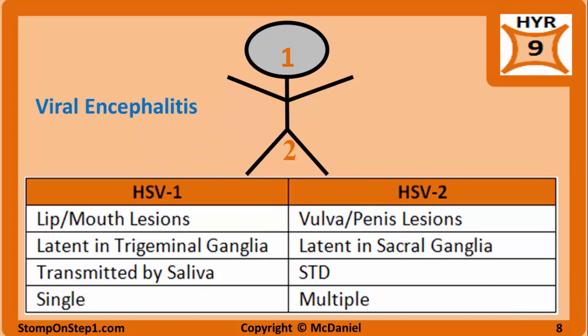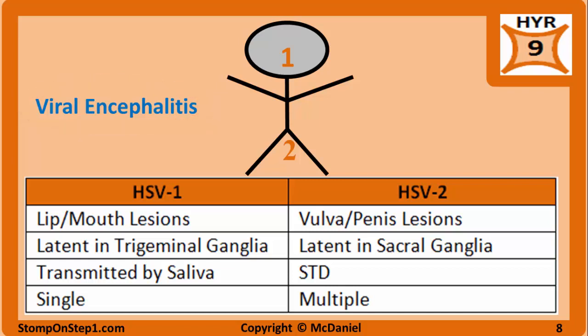One last thing about herpes simplex is that HSV1 is the most common cause of viral encephalitis. It most often affects the temporal lobe and presents clinically with altered mental status, fever, and in some cases seizures. Immunosuppressed individuals are at the greatest risk for herpes encephalitis. Lumbar puncture shows high lymphocytes in the CSF, and imaging may show changes in the temporal lobe. Both HHV1 and HHV2 are also TORCH infections that can lead to neonatal herpes, which we will save for a later video.